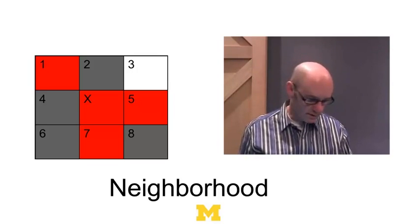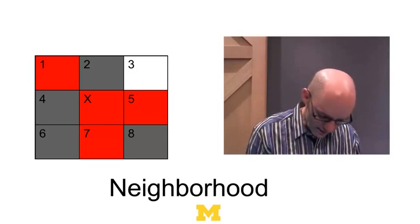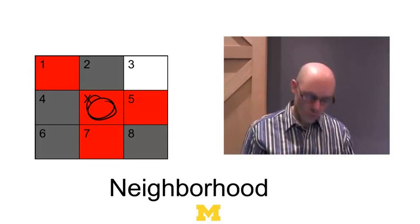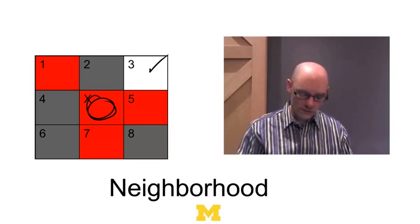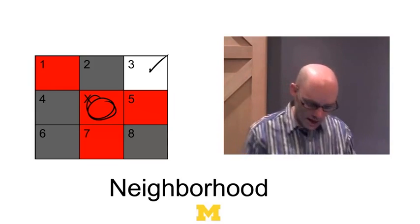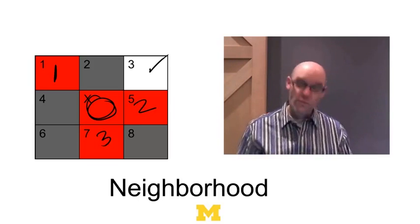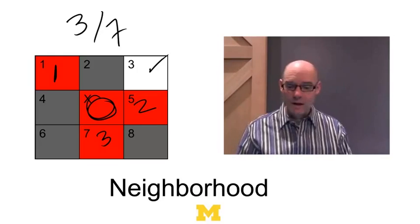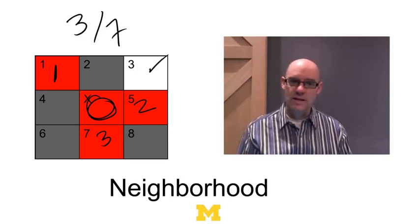In this picture, we've got a person living at X. There are eight neighbors, numbered one through eight, and one of those spots is blank — number three — so she's got a total of seven neighbors. Let's let red represent rich people and gray represent poor people. This is a rich person. She's got three neighbors who are rich like her, but four neighbors who aren't. So three out of her seven neighbors are the same as her, and she's got to decide: is three out of seven enough? Should I stay or should I move?